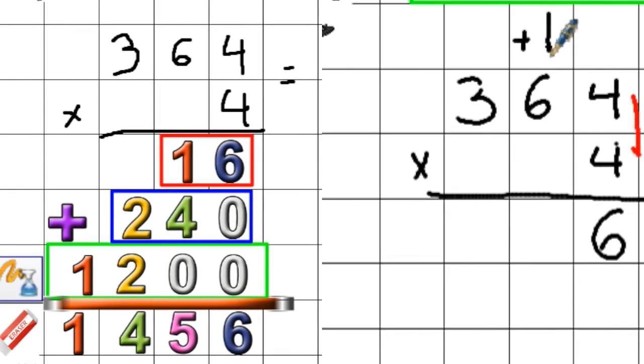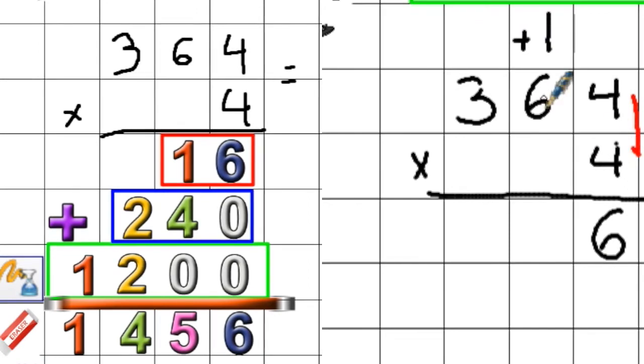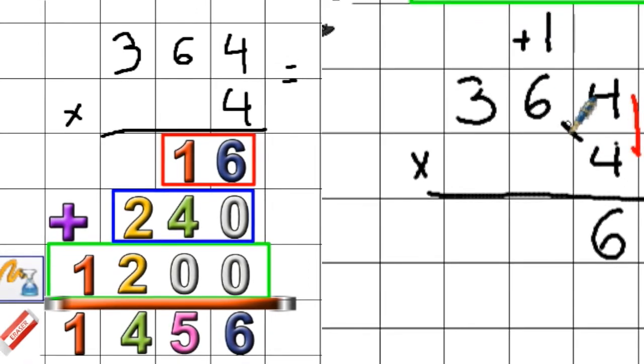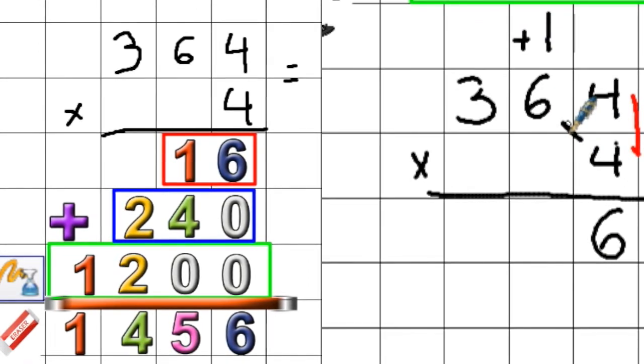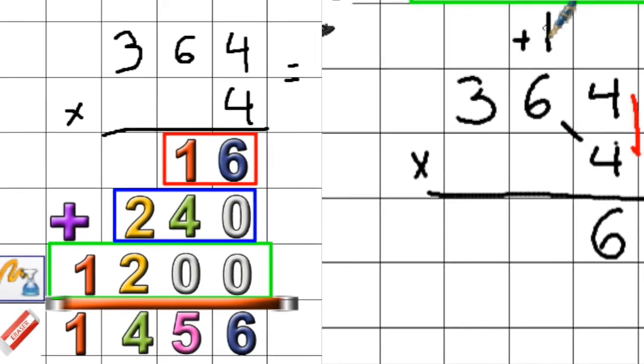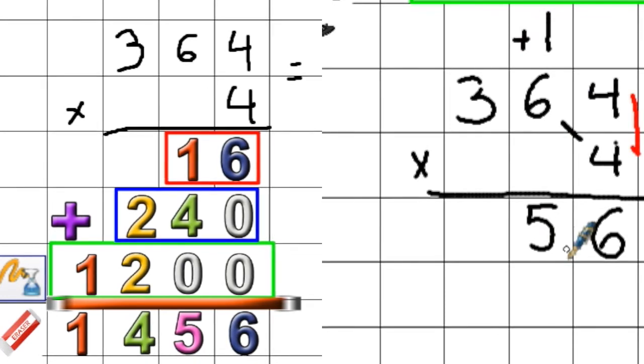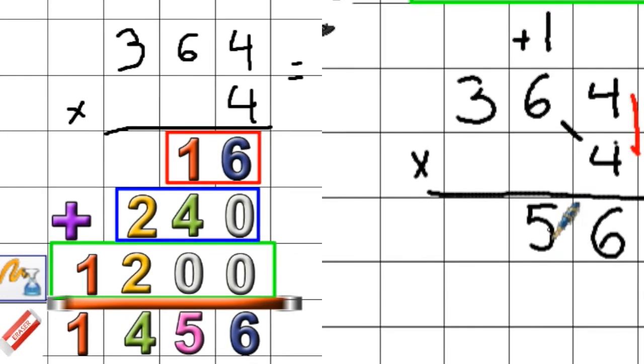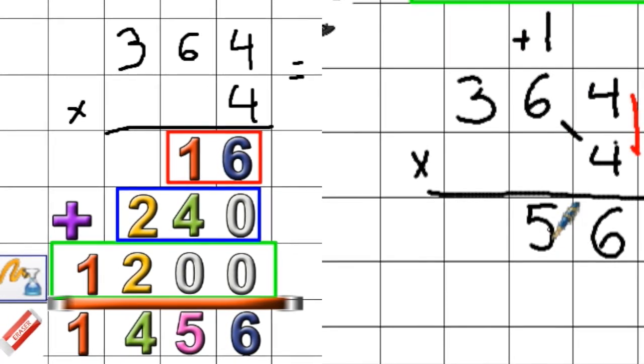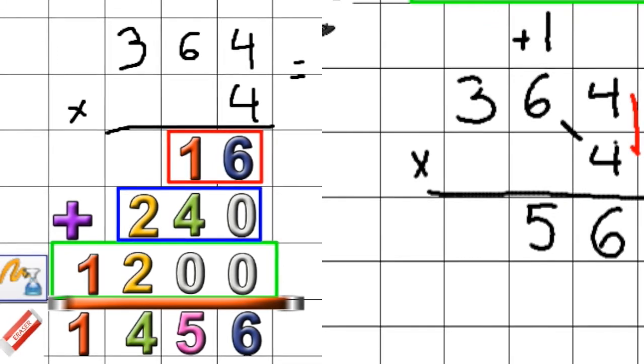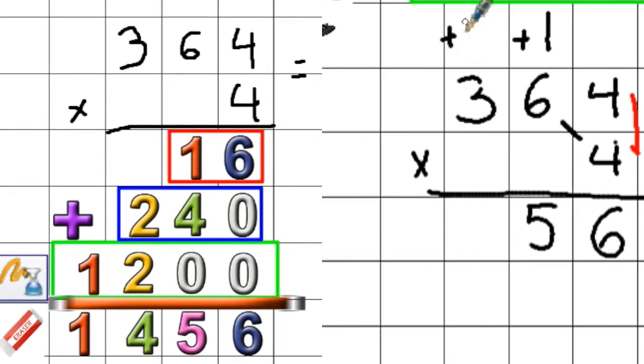We break that apart as six ones. The six will remain. We add the one ten to the tens place. And six tens times four would give us 24 tens, plus one more ten gives us 25 tens. The five will remain in the tens place, and the two is regrouped to the hundreds place because 25 tens is the same thing as saying two hundreds and five tens.